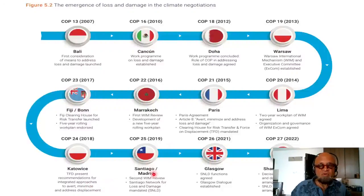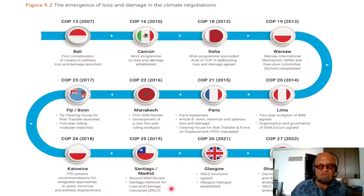At COP25 in 2019, Santiago-Madrid, the second WIM review took place and the Santiago Network for Loss and Damage, SNLD, was mandated. At COP26 in 2021 in Glasgow, the SNLD functions were agreed and the Glasgow Dialogue was established.